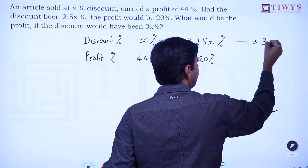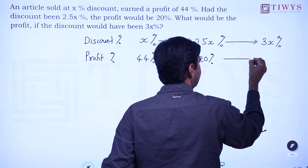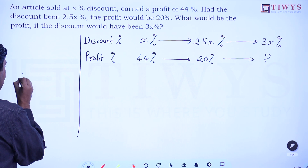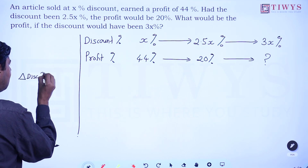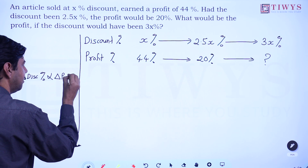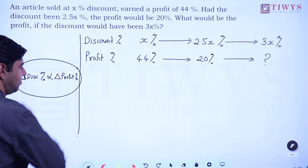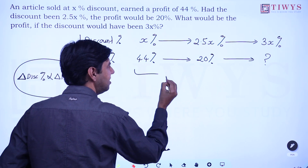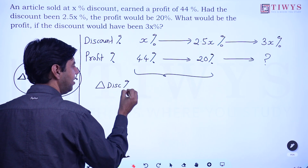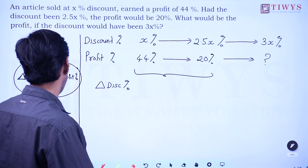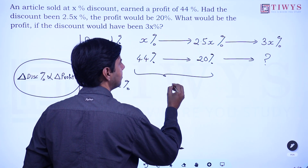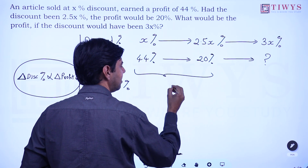If discount becomes 3x, what will be the profit percentage? The shortcut is that the change in discount percentage is directly proportional to the change in profit percentage. From the first to the second case, the change in discount is 2.5x minus x, which is 1.5x.